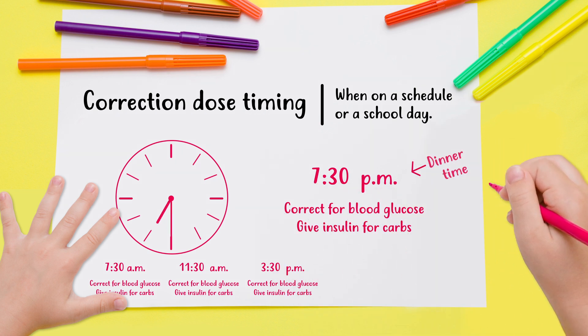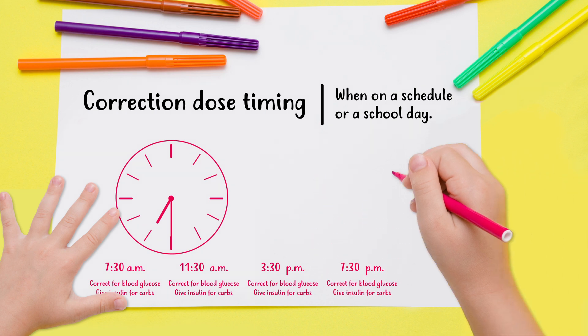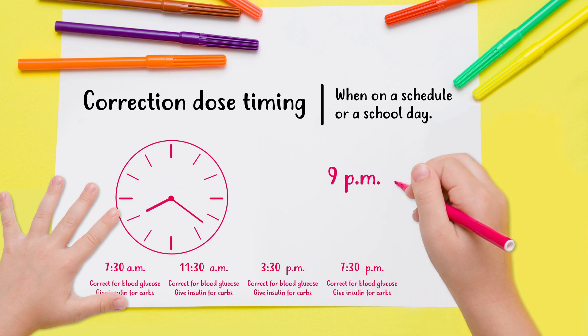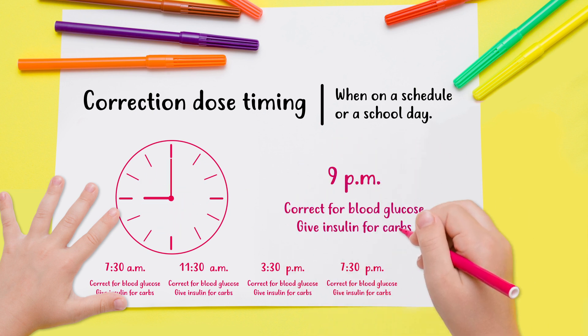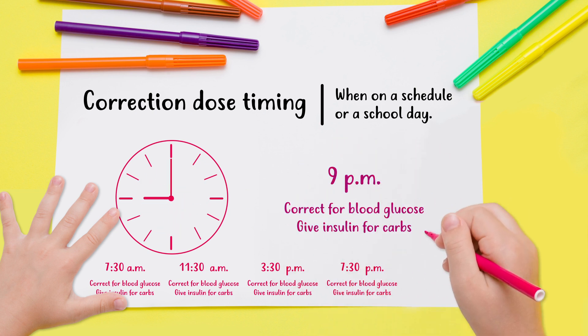Let's say you eat dinner at 7:30 p.m. It has been more than three hours since your last dose of fast-acting insulin, so dose for your carbs and your glucose if it's high. At 9 o'clock at night, you are getting ready for bed and your glucose is high.